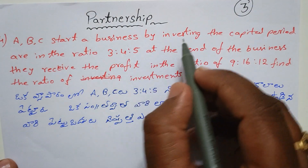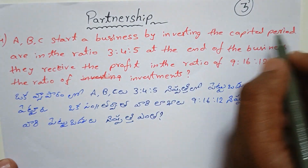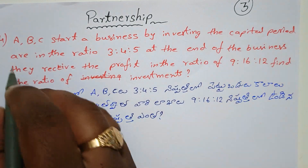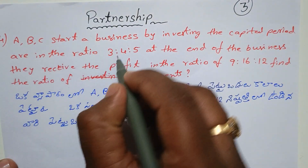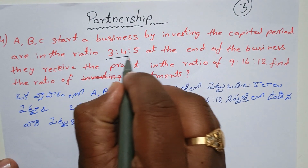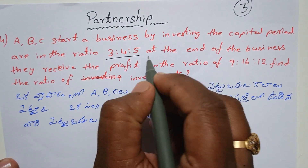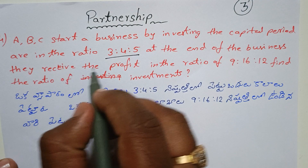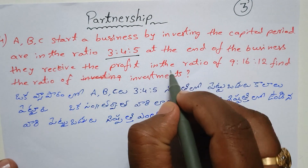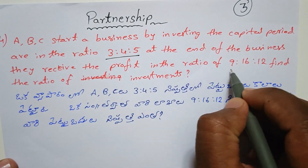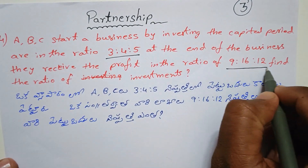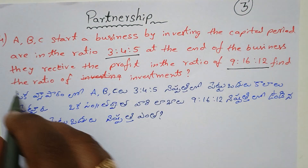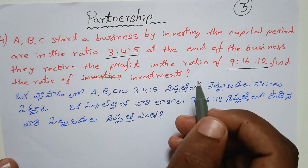ABC started a business by investing in the capital period in the ratio 3 is to 4 is to 5. At the end of the business, they received the profit in the ratio of 9 is to 16 is to 12. Find the ratio of investments.